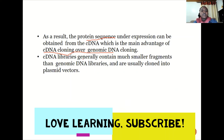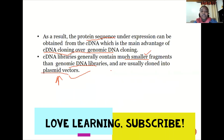cDNA libraries generally contain much smaller fragments than genomic DNA libraries and are usually cloned into plasmid vectors — the smallest among the available vectors. Because cDNA library fragments are small, plasmid vectors are sufficient, whereas for genomic DNA libraries, larger vectors such as yeast artificial chromosomes are required.